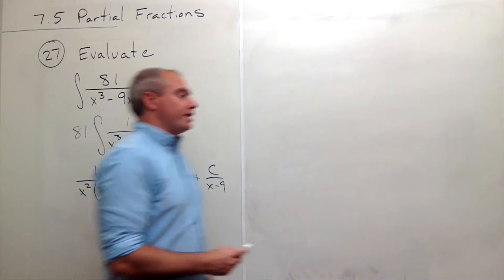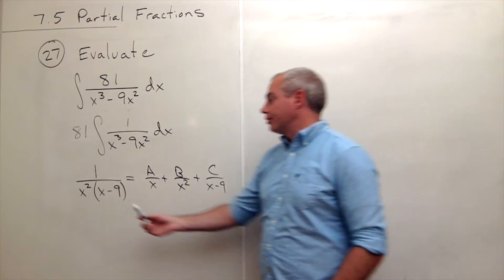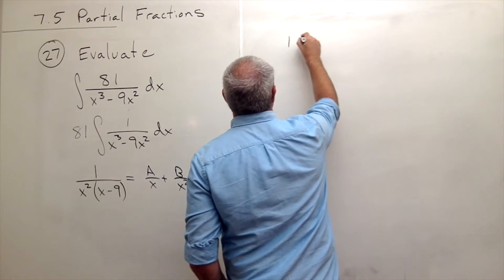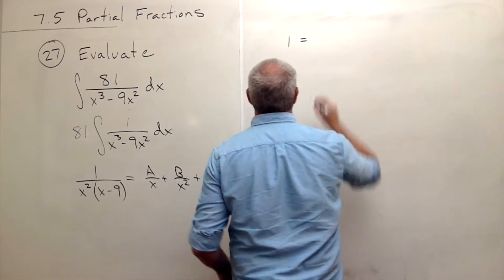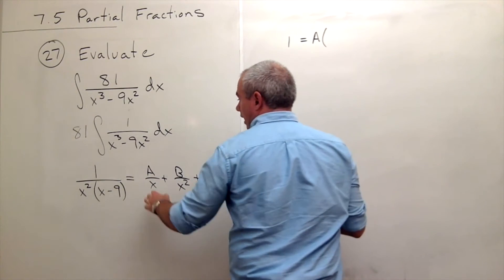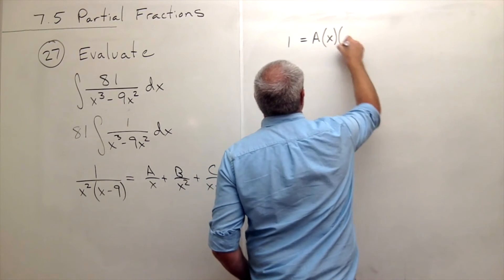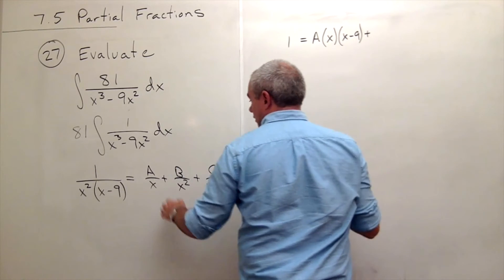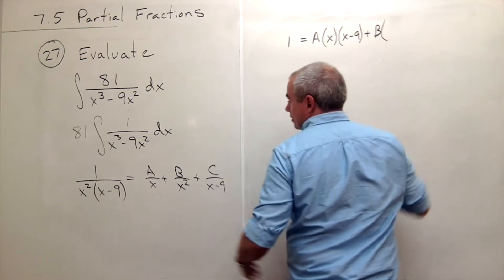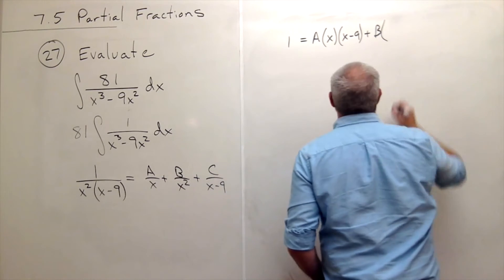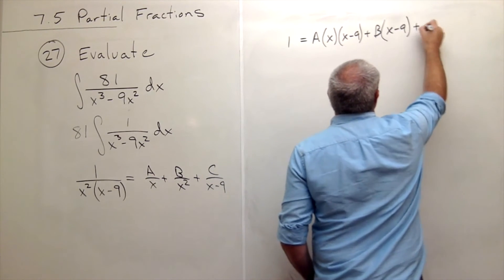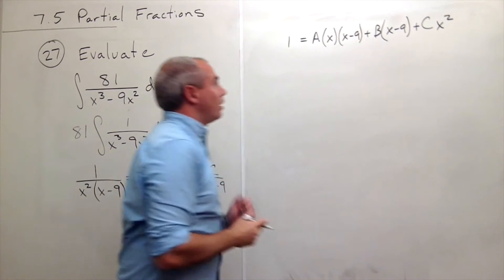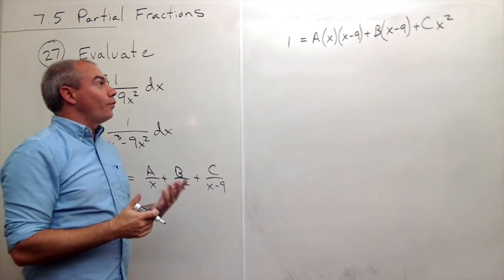Now we can clear out the fractions by multiplying through by x squared times x minus 9. If I do, I get that 1 is equal to A times x times x minus 9 plus B times x minus 9 plus C times x squared. Now I'm ready to solve for A, B, and C.